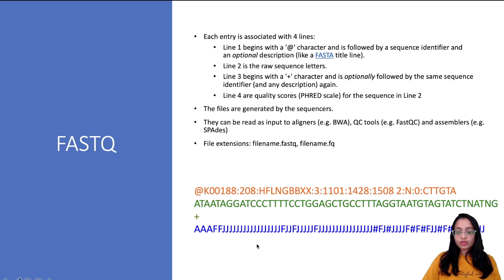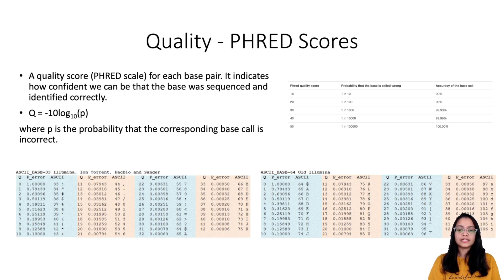These files are generated by sequencers and can be used as input to aligners, quality control tools, and assemblers. These files have extensions .fastq or .fq. PHRED scores basically tell us how confident the machine was that it called the correct base each time, which means the higher the PHRED score, the lower the probability that the base call is incorrect.